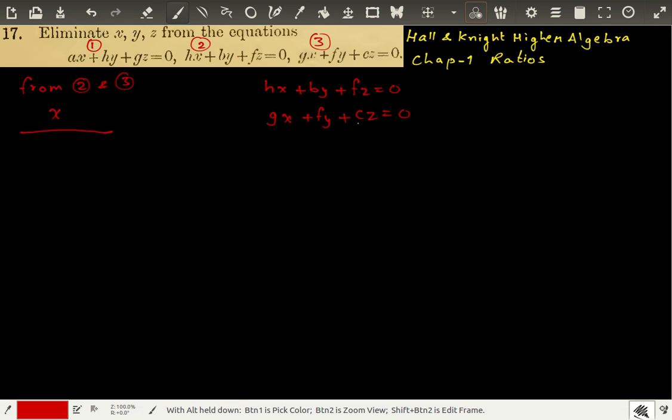So we have x over bc minus f squared is equal to y over fg minus hc, is equal to z over hf minus bg is equal to some constant k.